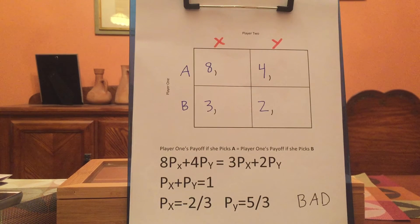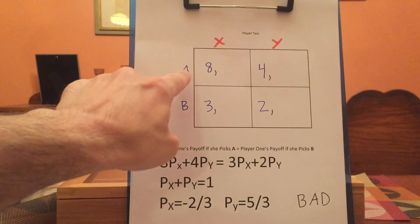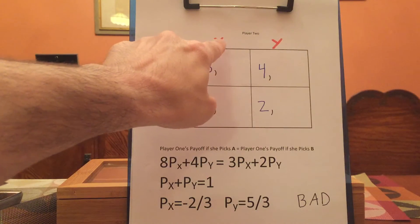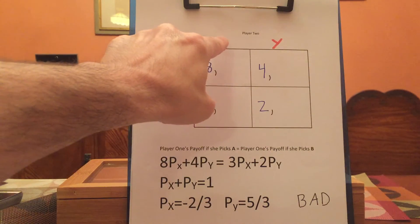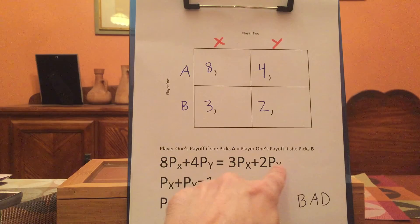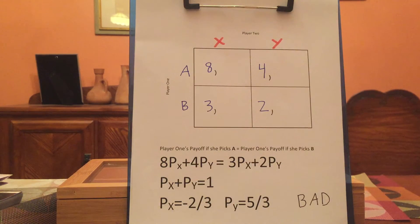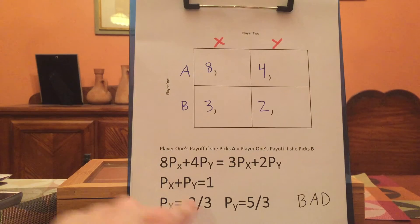We want player one to randomize, so we need to give her the same average payoff from playing A as B. If player one plays A, she gets eight times the probability that X is played, plus four times the probability that Y is played. If she plays B, she gets three times the probability that X is played plus two times the probability that Y is played. So player one is willing to randomize if this equation holds. We know the sum of probabilities has to be one — two equations, two unknowns — we solve and we get: p-sub-x is negative two thirds.